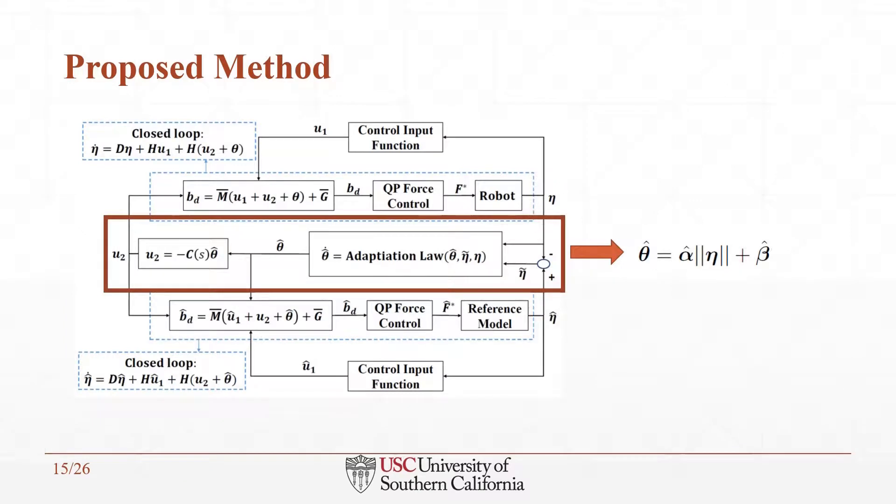According to the formulation of theta, we estimate theta hat indirectly through alpha hat and beta hat. And these values are computed by the following adaptation laws based on the projection operator and gamma, which is the adaptation gain matrix. Also, the reason why we chose this projection function, I mean y_alpha and y_beta, comes from the stability proof of the system via the Lyapunov theorem. You can find more details about it in our paper.